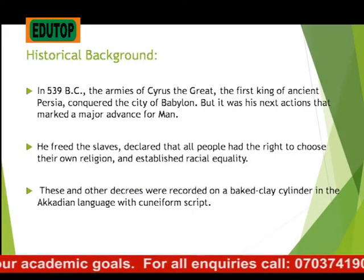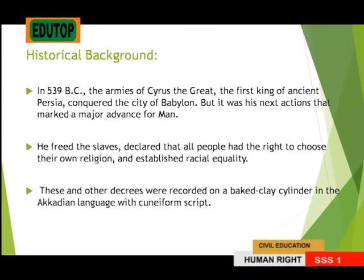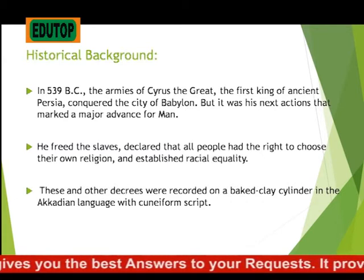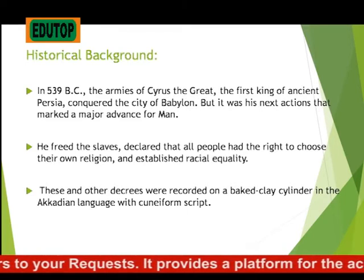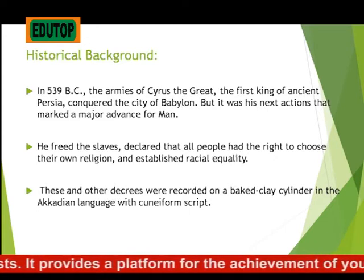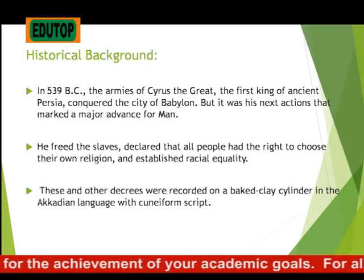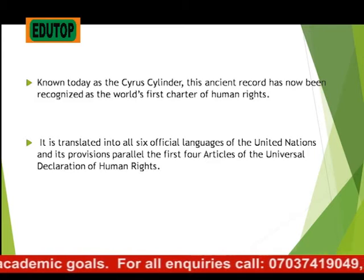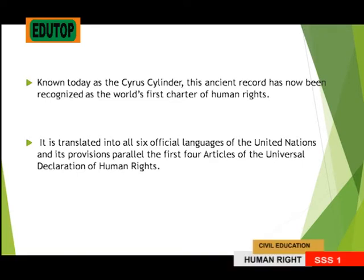In 539 BC, the armies of Cyrus the Great, the first king of the ancient Persia, conquered the city of Babylon. His next actions marked a major advancement for mankind: he freed the slaves, declared that all people had the right to choose their own religion, and established racial equality.